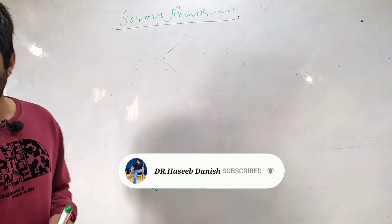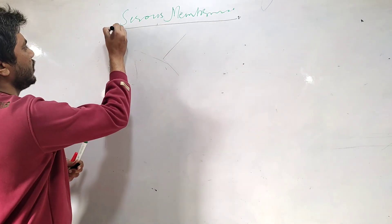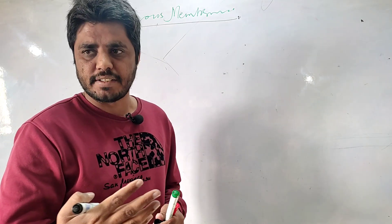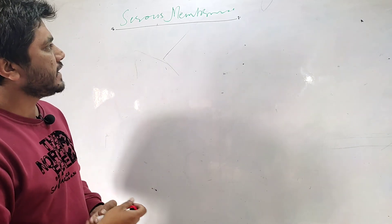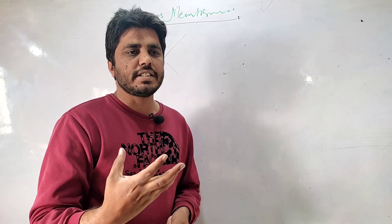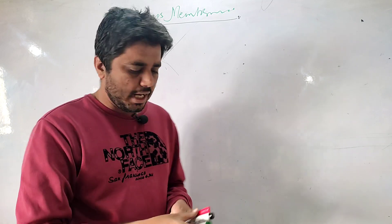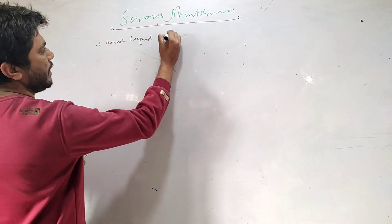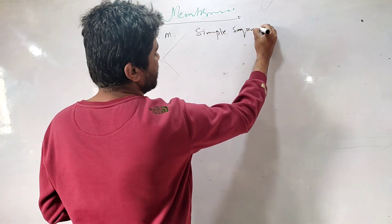We are going to discuss serous membrane, one of the basic topics related to general anatomy. You must have some idea what serous membranes are, where they are located, and what role they play. If somebody asks what is the serous membrane, for me, serous membrane is a double-layered membrane which is actually made up of simple squamous epithelium.